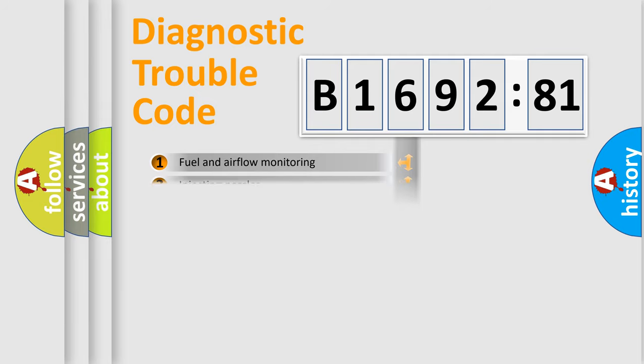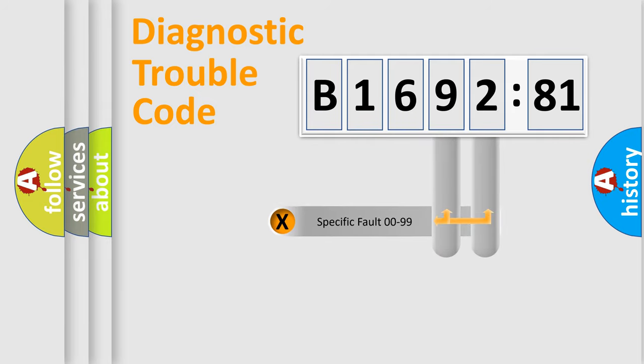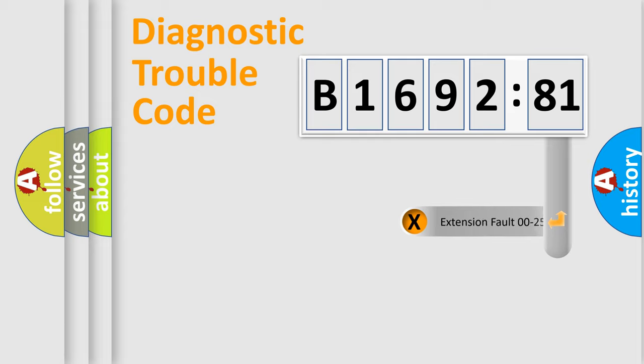The third character specifies a subset of errors. The distribution shown is valid only for the standardized DTC code. Only the last two characters define the specific fault of the group. The add-on to the error code serves to specify the status in more detail.